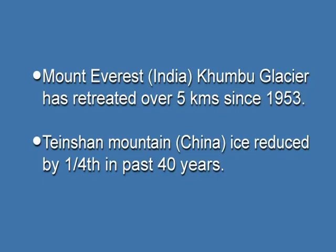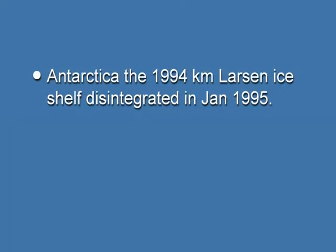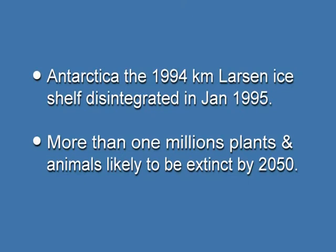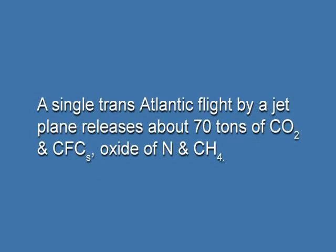The Tianshan mountain ice in China has been reduced by one-fourth in the past 40 years. In Antarctica, 1994 kilometers of the Larsen ice shelf disintegrated in January 1995. More than one million plants and animals are likely to become extinct by 2050. A single transatlantic flight by a jet plane releases about 70 tons of carbon dioxide, chlorofluorocarbons, nitrogen oxide, and methane. In India, thermal power plants produce more than 50 million tons of carbon dioxide each year.